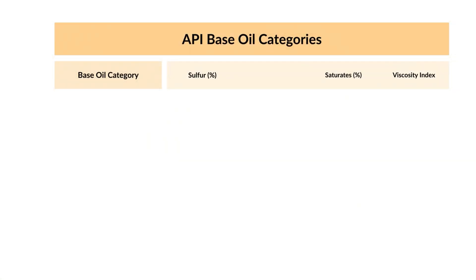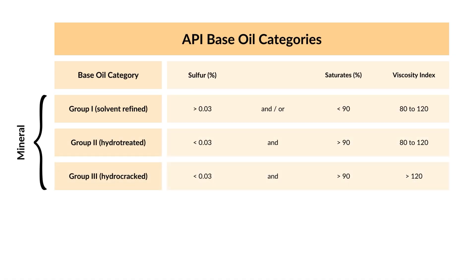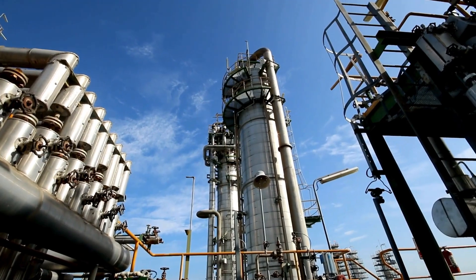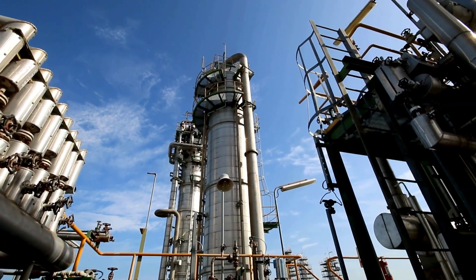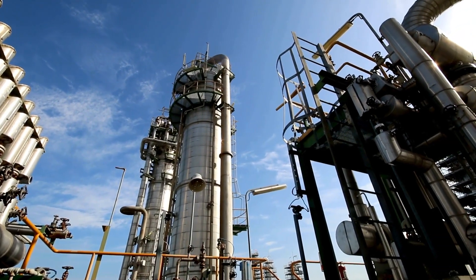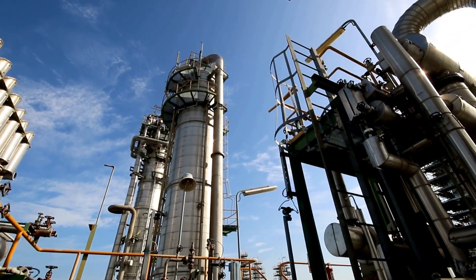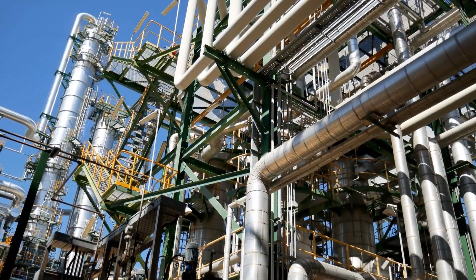The American Petroleum Institute has set standards for sulfur content, saturates, and viscosity index to categorize mineral oils into Group 1, Group 2, and Group 3. This is the API base oil chart. Group 1 mineral oils are refined through a solvent extraction process which, while cheaper, leaves behind sulfur and unsaturate components that impact oxidation and thermal stability.